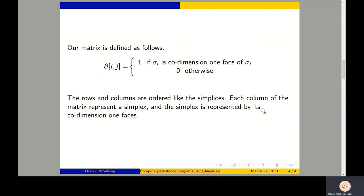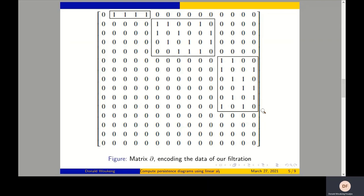Here is our matrix. Each column represents a simplex in the order of the filtration. Each entry of the matrix has a value which is either zero or one. The value will be one if sigma i, at row i, is a co-dimension one face of sigma j at column j. If it's not the case, I get a zero. For our filtration, you have this matrix.